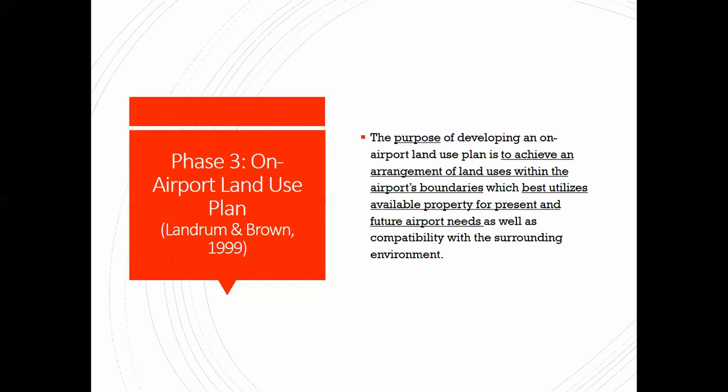Phase three is airport land use plans. A land use plan designates areas for specific uses: some areas are for housing or suburbs, others for industrial activity, others for recreation like parks. In the airport context, the purpose is to achieve an arrangement of land uses within the airport's land use plan that best utilizes available properties for present and future airport needs.